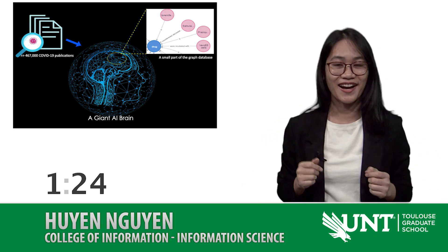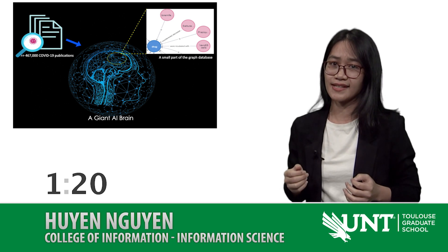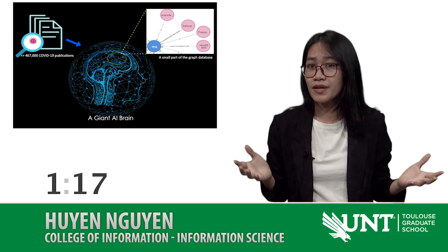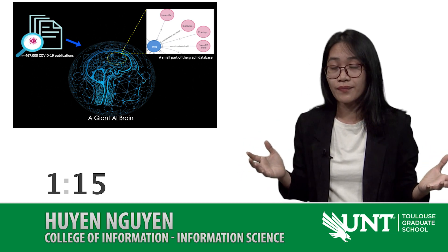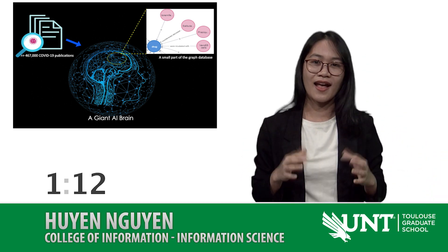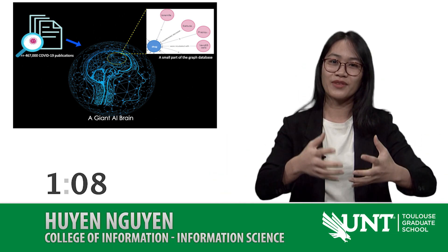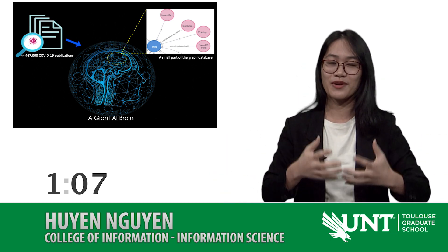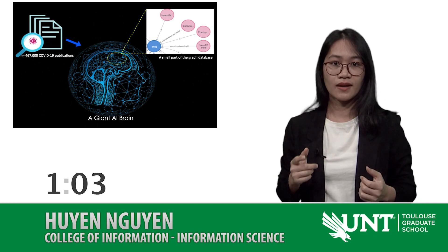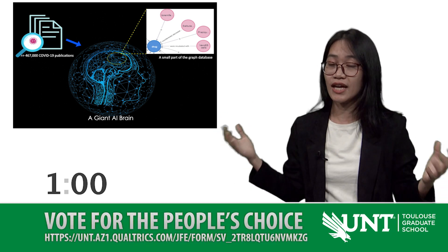Now let's see how it works. A scientist researching COVID-19 vaccines is curious about what is the most popular ingredient of the COVID-19 vaccine. So he will search that keyword in my graph database, and then all the synthesized knowledge from the related papers will turn up. And remember, that's synthesized knowledge — that's more than just documents retrieved from a search engine like Google.